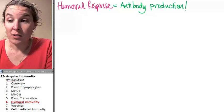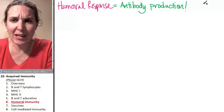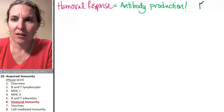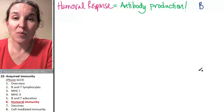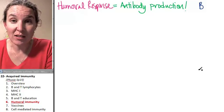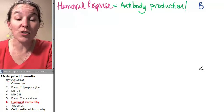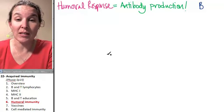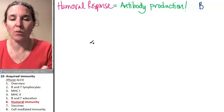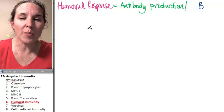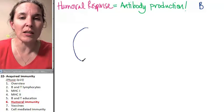The humoral response. Who did it? The B lymphocytes. They're the ones who are going to make this happen. So, let's draw a picture of a B lymphocyte.